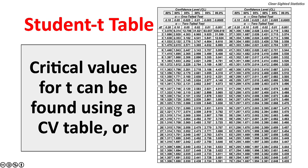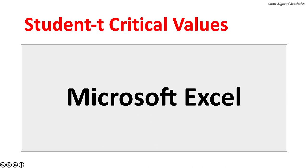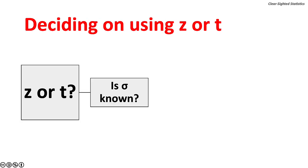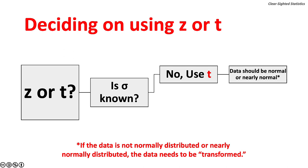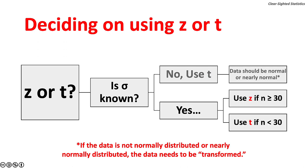The critical value for T can be found using the Student t table or Microsoft Excel and other statistics programs. When deciding whether to use Z or T, first ask whether the population standard deviation sigma is known. When the population standard deviation is unknown, use T. When using T, the distribution of the data should be normal or nearly normal — that is, symmetrical. If the data is not normally distributed, it needs to be transformed. If the population standard deviation is known, use Z if the sample size is 30 or more; if the sample size is 29 or less, use T.